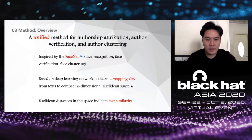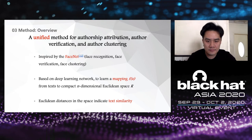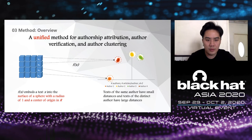We were inspired by FaceNet, a unified method for face recognition, verification, and clustering that achieved great success in computer vision. Similarly, we proposed a unified method based on deep learning. Our model learns the mapping from text to a compact n-dimensional Euclidean space, embedding text onto the surface of a sphere with radius 1 and center at the origin. Basically, our model is like a function: it takes text as input and turns it into a point on a graph. In Euclidean space, the distance indicates text similarity. There are four authors, each with four articles — text from the same author has shorter distance, and vice versa. In the graph, 16 articles are projected to the space; X1 and X2 are embedded to red dots, and since they are located together, we suppose they are written by the same author.